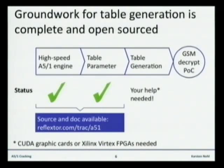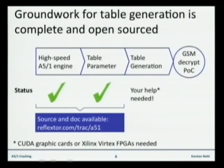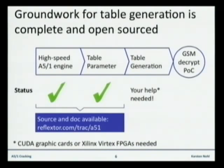The process going forward — and most of this has been done already — is to find an as cheap as possible, as fast as possible engine that can crunch through A5-1 as efficiently as possible, and then use it.